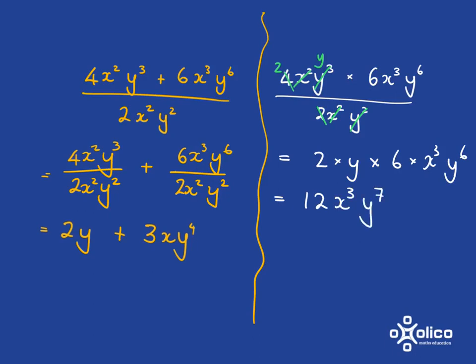So the important thing to note is if you've got a plus or a minus you get two separate terms and you've got to distribute in. But if you've just got everything multiplied together you don't have to do that.